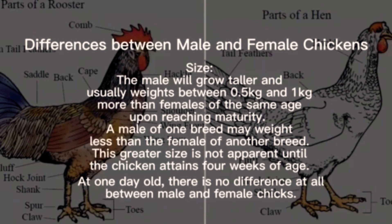Size: the male will grow taller and usually weigh between 0.5 kilograms and 1 kilogram more than females of the same age. Above reaching maturity, a male of one breed may weigh less than a female of another breed. This greater size is not apparent until the chicken attains four weeks of age; at one day old there is no difference at all between male and female chicks.